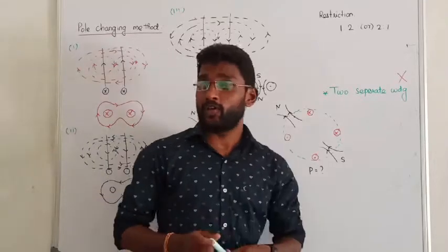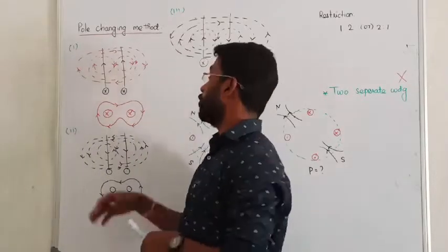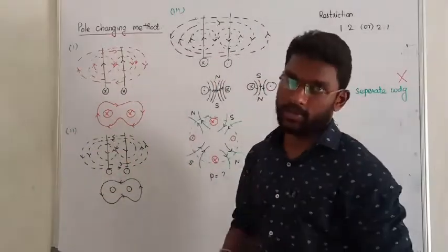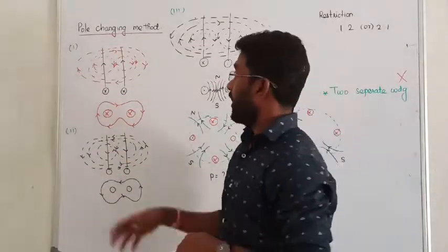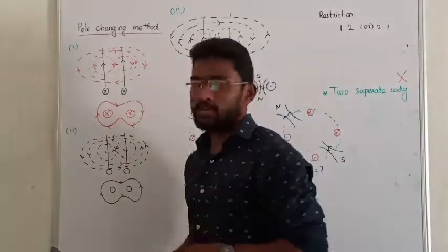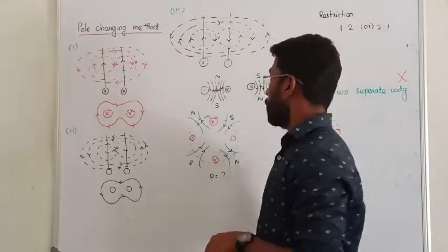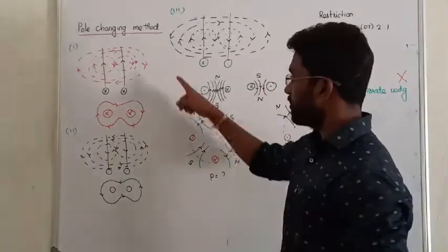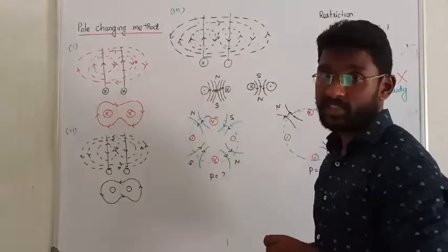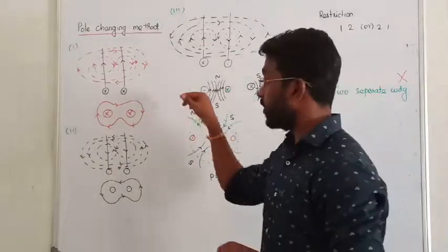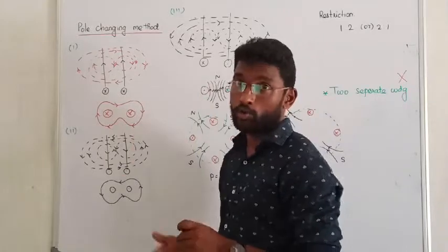Next, we are going to discuss about the pole changing method. In the pole changing method, we have two categories. One is called the consequent pole changing method, which is what we are going to discuss about.